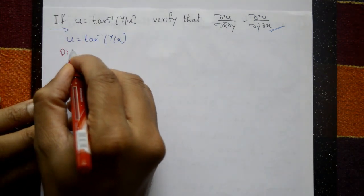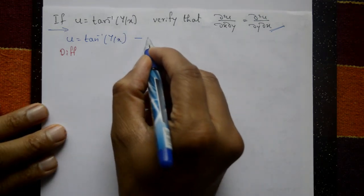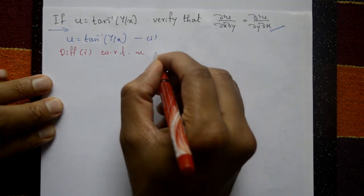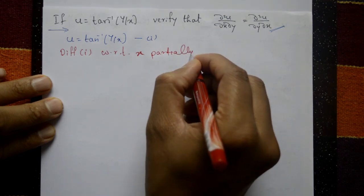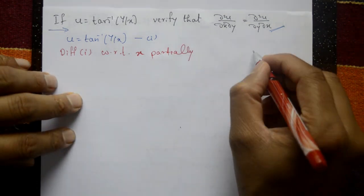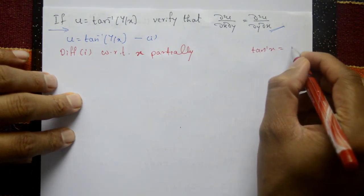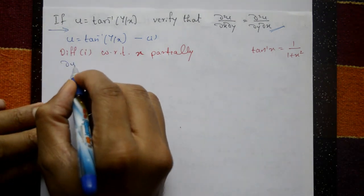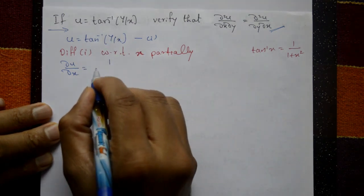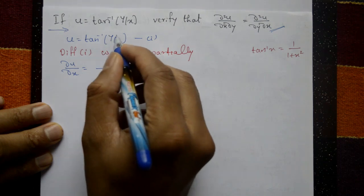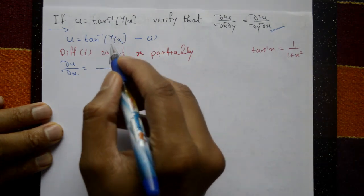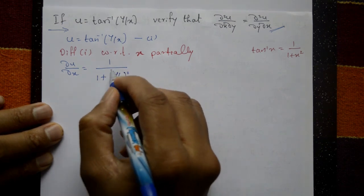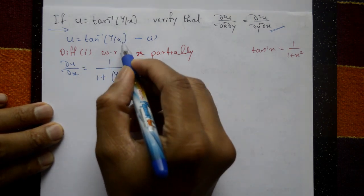Differentiate equation one with respect to x partially. Using the standard formula: the derivative of tan inverse x is 1 upon 1 plus x squared. So ∂u/∂x equals 1 upon 1 plus (y/x) whole squared, then differentiate y/x with respect to x.